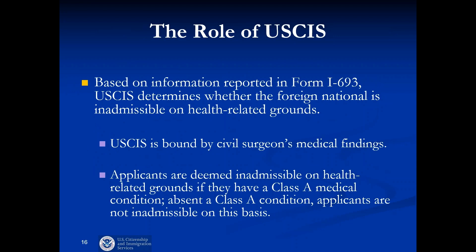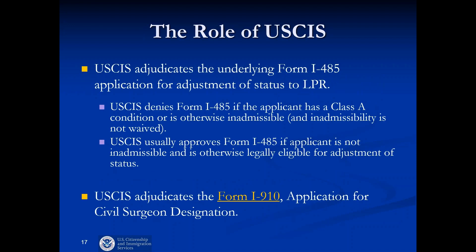USCIS's role is primarily to adjudicate the Form I-485, the adjustment of status application, and based on results shown in the I-693, we determine if the applicant is admissible or inadmissible on health-related grounds — Class A means inadmissible, Class B means admissible. USCIS also adjudicates the Form I-910, the application for physicians seeking civil surgeon designation. Prior to 2014, local USCIS offices handled designation, but as of March 2014, the process was centralized and the Form I-910 is now filed with the USCIS National Benefits Center. We currently have over 5,500 designated civil surgeons throughout the country.